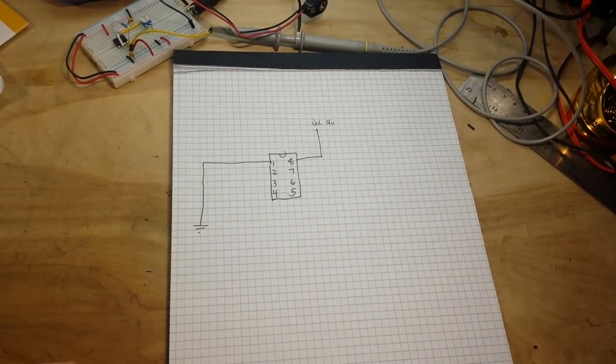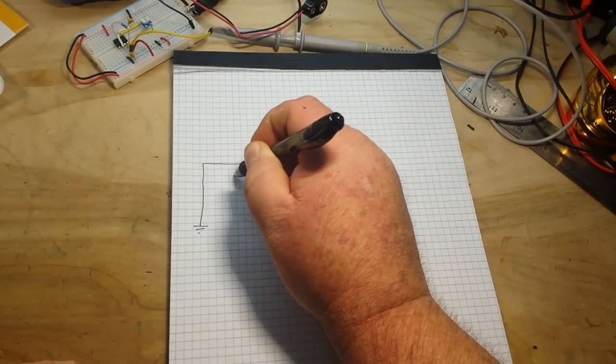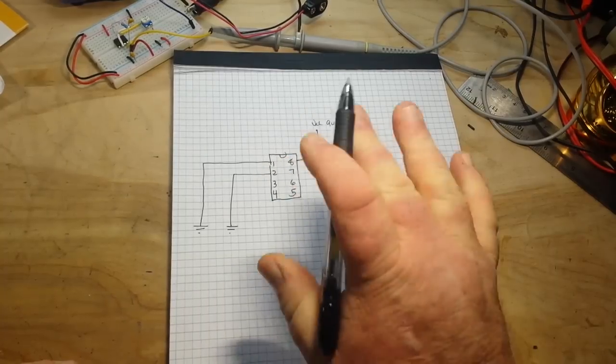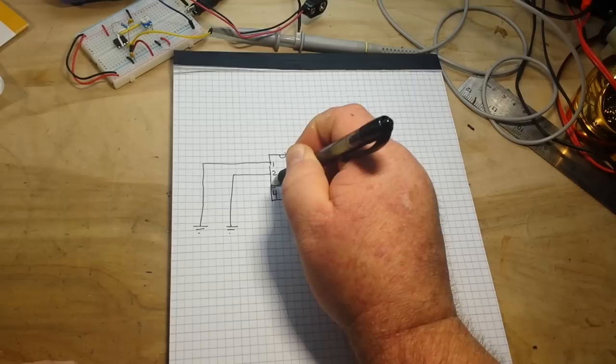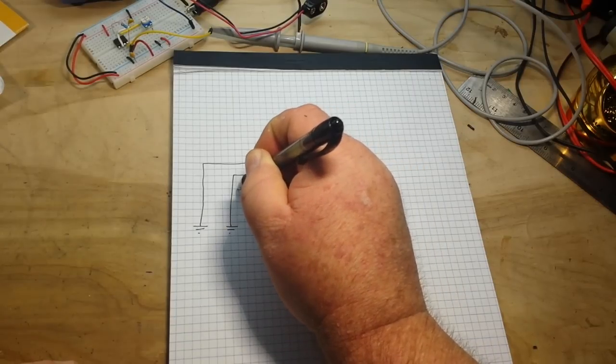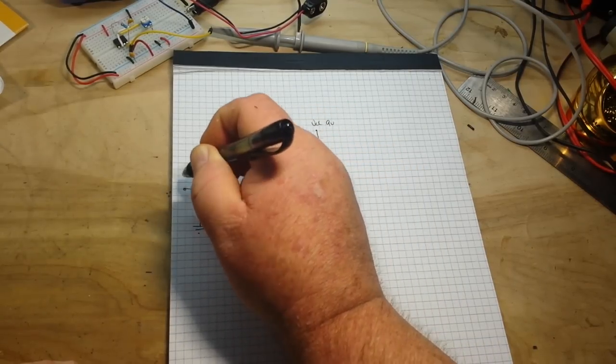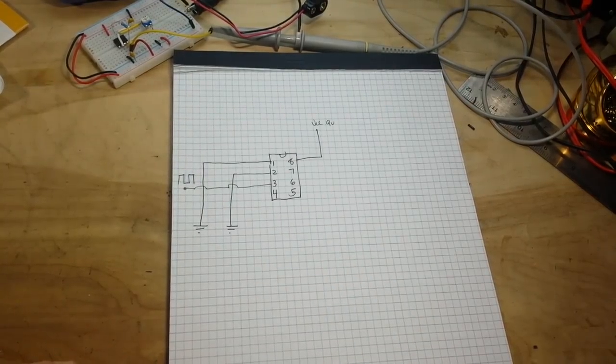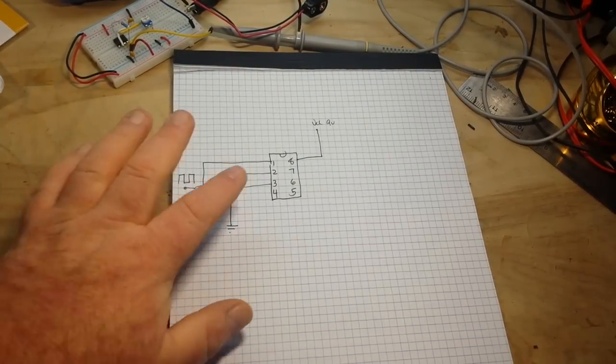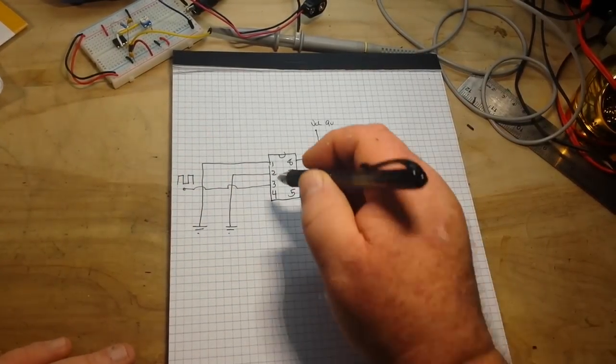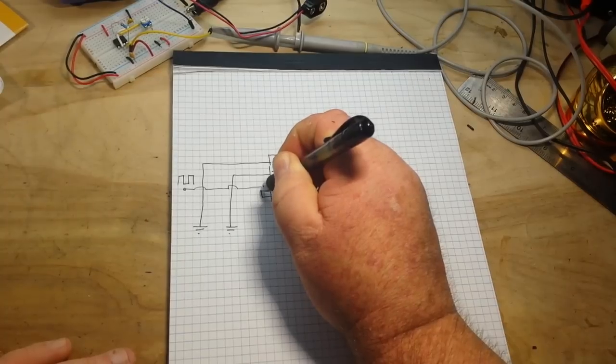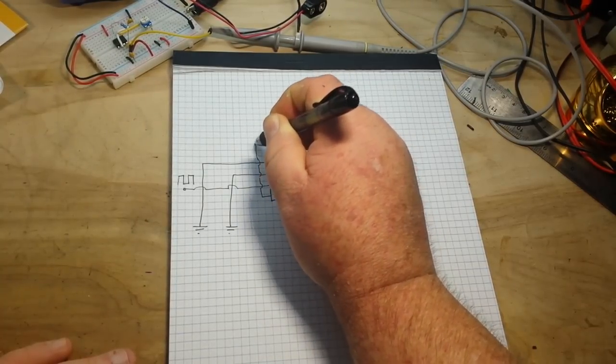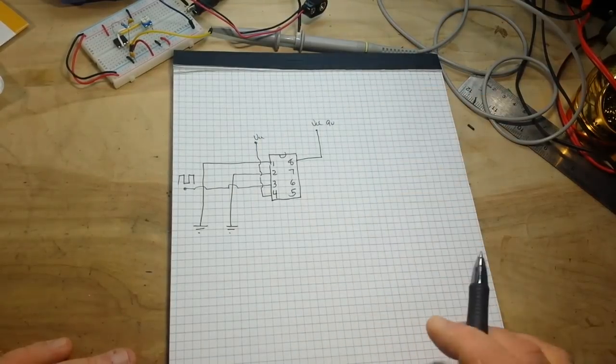So we are going to take our trigger pin and tie it to ground as well. But wait, because there's more. And then we also have our output, which is just going to go over here to our frequency. Now, pin 4 is our reset pin. It is also active low. So we don't want it to be active. We're going to tie it also to VCC.